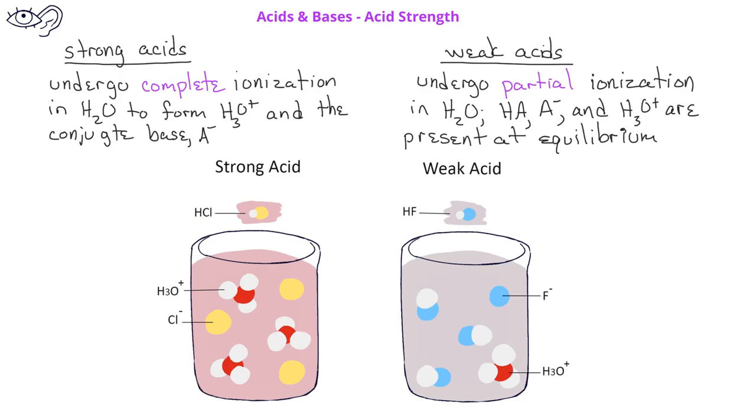These figures show the difference between a strong acid and a weak acid. In the figure on the left, we have hydrochloric acid dissolved in water. When hydrochloric acid dissolves in water, it forms hydronium ions and chloride ions. And you see in the beaker that all of the HCl has ionized or dissociated into hydronium ions and chloride ions.